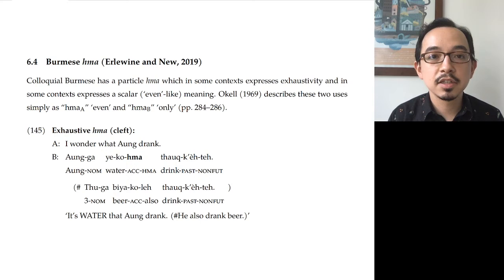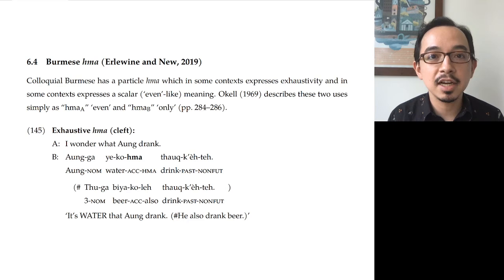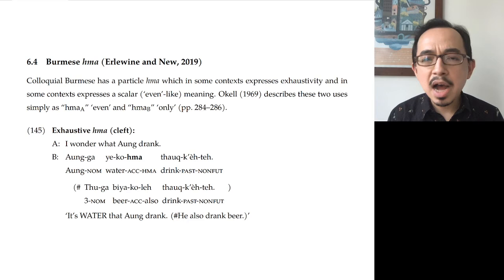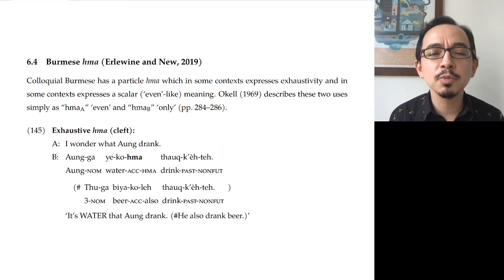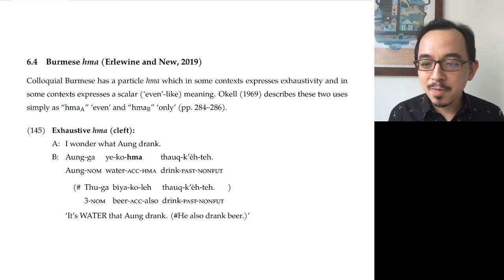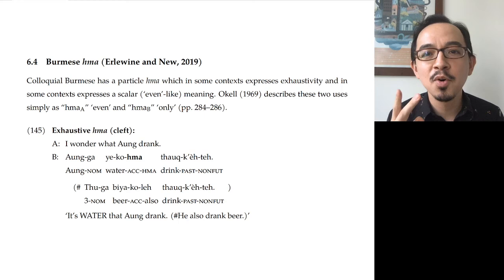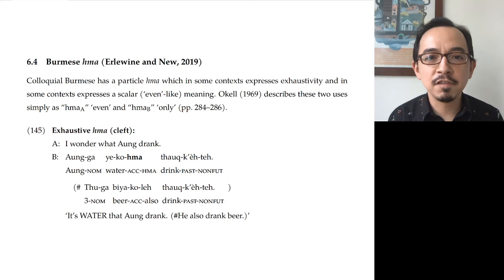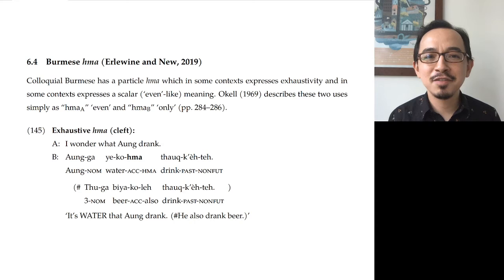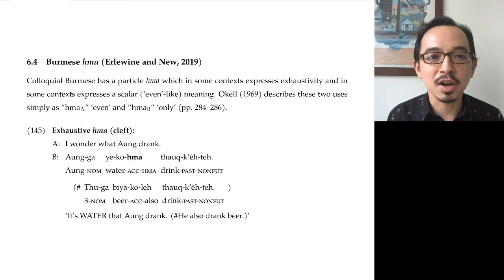Finally, in the last section of this lecture, I want to share one particular case study of a scalar particle in an understudied language. This is work I've done with my student and RA, Keely Nhu, now going to grad school at MIT. We looked at the interpretation and distribution of the particle 'ma' in Burmese. Ma is very interesting — when you look in a classic dictionary, ma shows up with two entries. In Okell's classic reference grammar and dictionary of Burmese, there are simply two items for ma: Ma A, translated as 'even,' and Ma B, translated as 'only.' We thought this was very surprising and interesting.